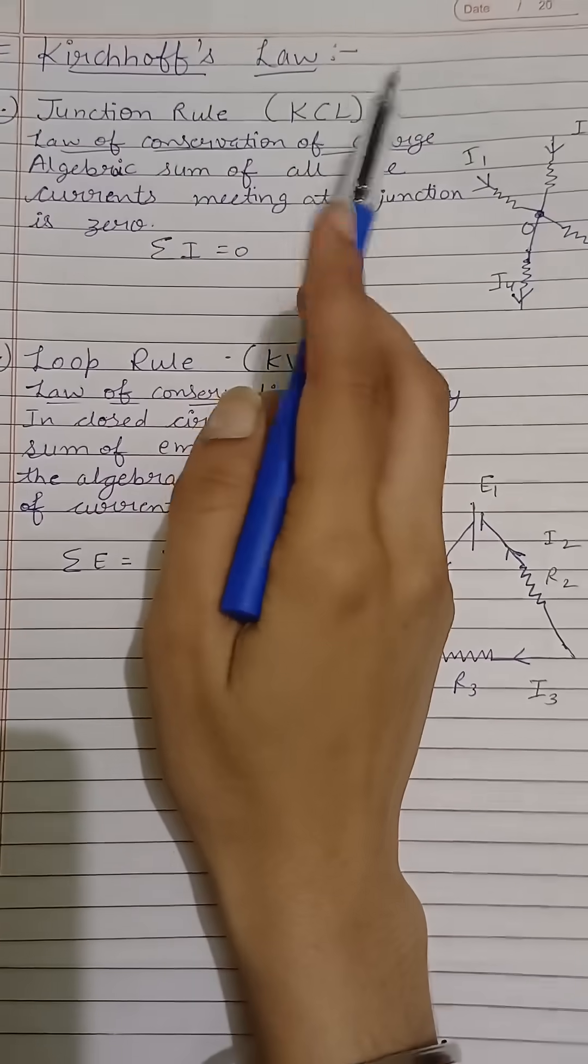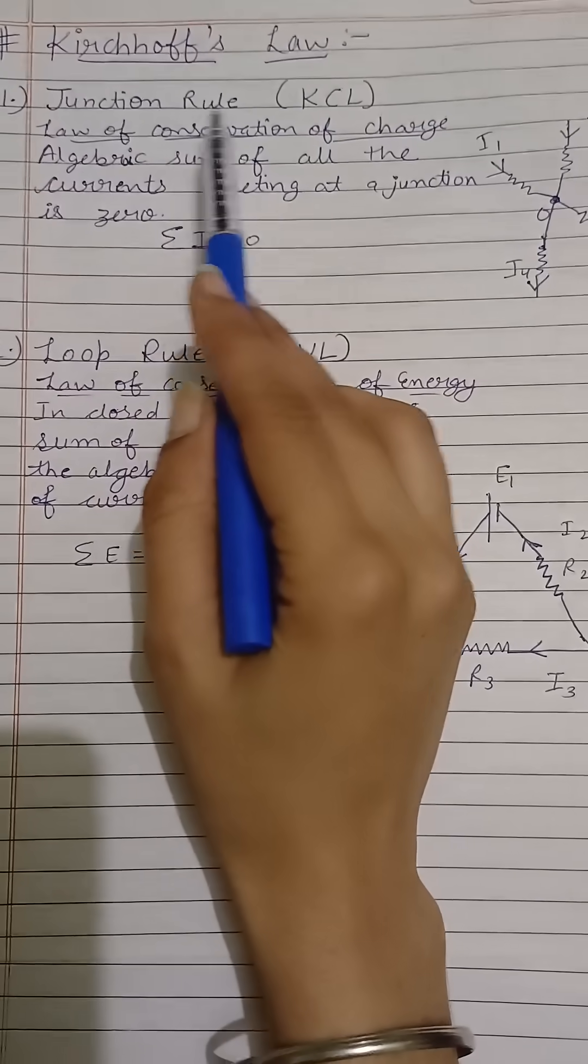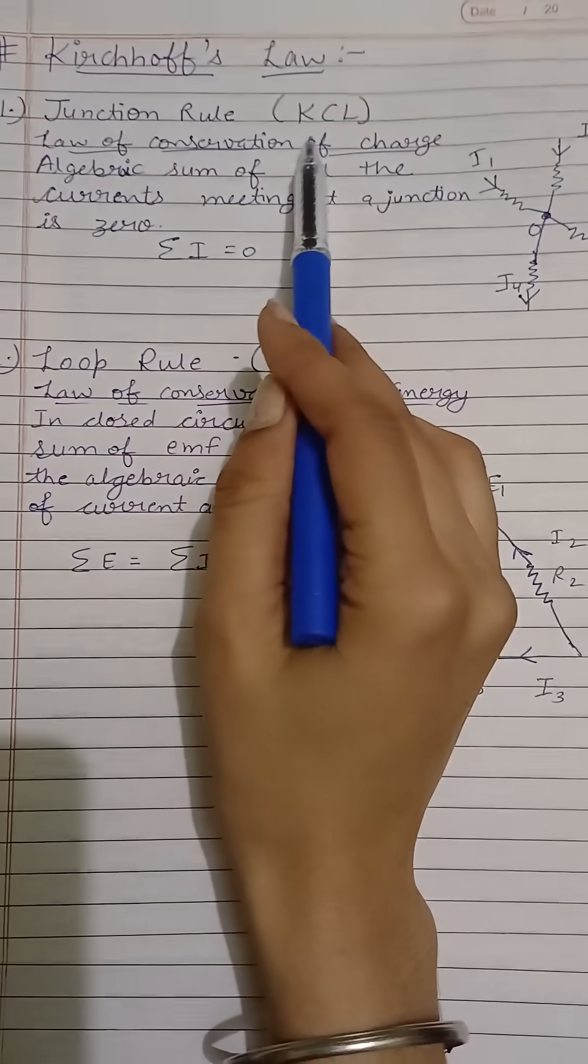Kirchhoff's Laws. We have two laws. First law is the junction rule, also called KCL, that is Kirchhoff Current Law.